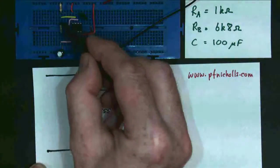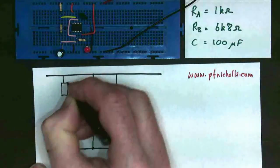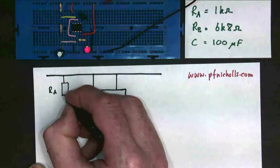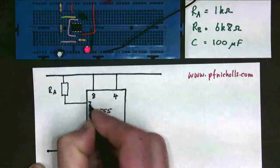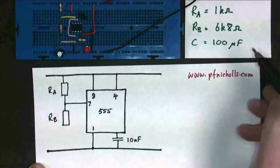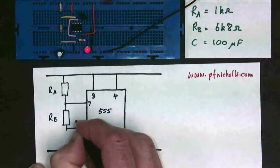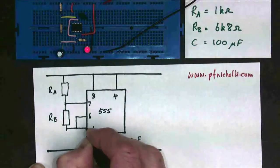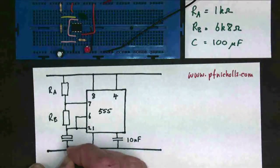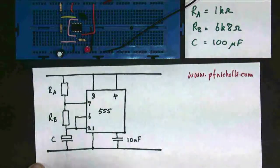And then we have our three timing components running down the edge of the circuit board. So they are a resistor called RA, and in this case I'm using a 1 kiloohm resistor. That connects to pin 7. It also connects to another resistor, which is nominally called RB, which in this case is 6K8. And that connects to pins 6 and pin 2. Then it connects to a capacitor, which in this case is 100 microfarads, labeled C. And these three components make the timing.